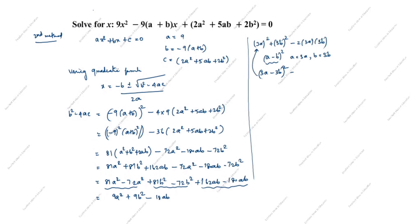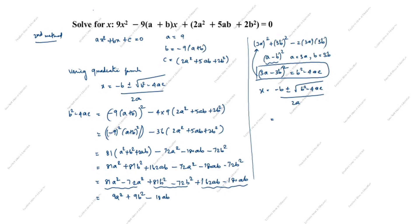Now we apply the quadratic formula. x = [−b ± √(b²−4ac)] / 2a. We have b = −9(a+b), so −b = 9(a+b). And √(b²−4ac) = √[(3a−3b)²] = 3a−3b. The denominator is 2a = 2×9 = 18.